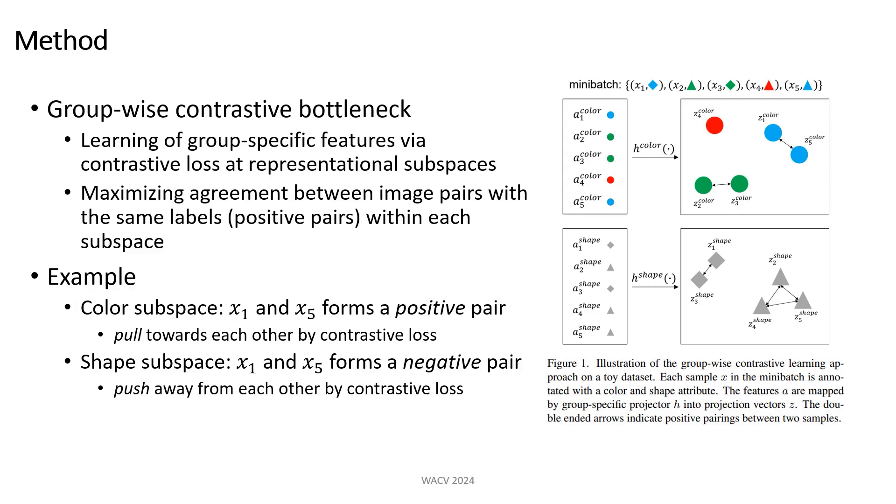As an illustration, consider a toy dataset with five samples, each labeled with two groups of weak labels, the color and shape attributes. Their feature representations are projected into two subspaces. In the color subspace, the samples x1 and x5 form a positive pair as they have the same color.